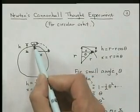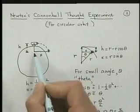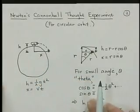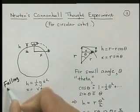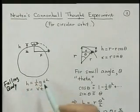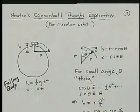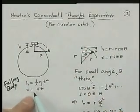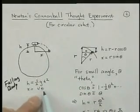And we have this height that it falls, and this downrange distance x. And using the falling body equations, we know that h is one half gt squared, that's how far it drops. And the x distance for velocity v is v times t.